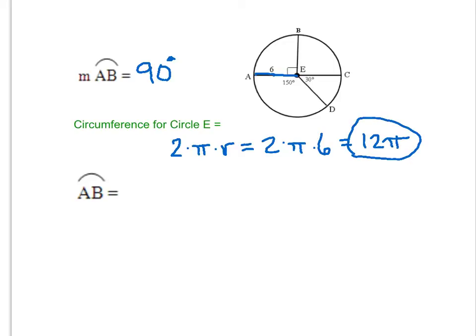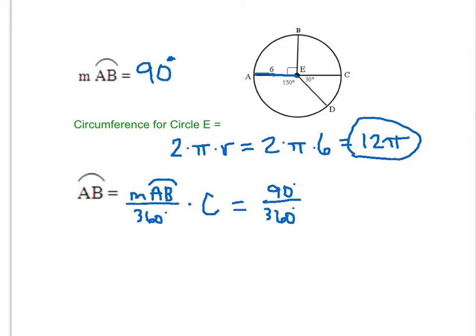Now to find arc length I use the formula: the measure of the arc over 360 degrees, multiplied by the circumference of the circle. We know the measure of arc AB is 90 degrees, so we do 90 over 360, times 12π. I'll write 12π as a fraction over 1.